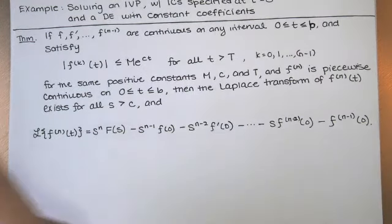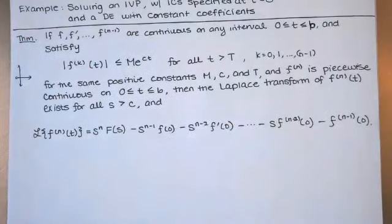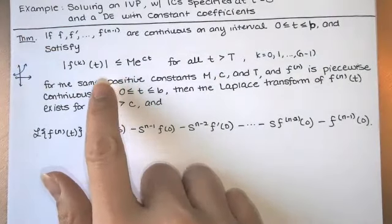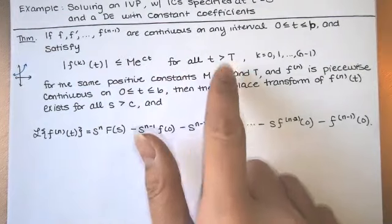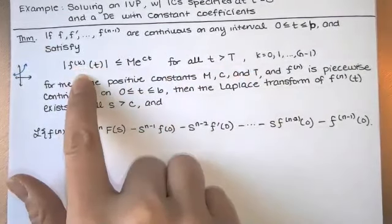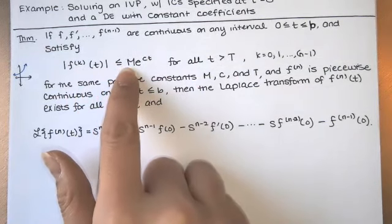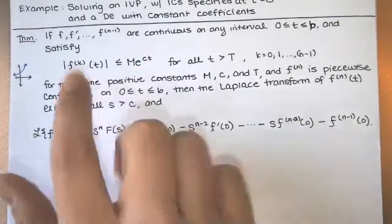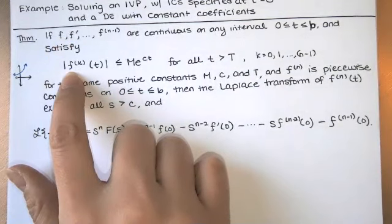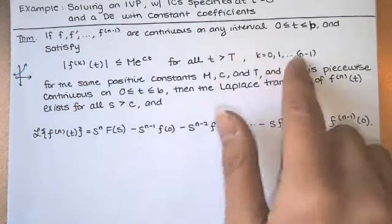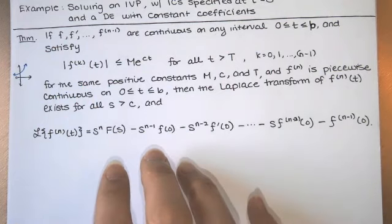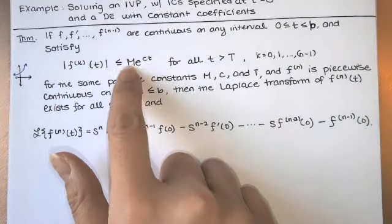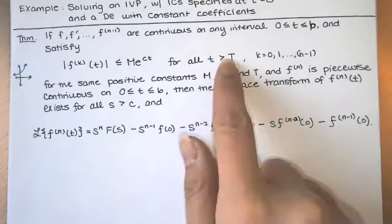These functions are all of exponential order for the same exponential function M·e^(ct). What that means is: eventually, for all t greater than some particular T, the kth derivative of f is less than this exponential function. So the exponential outpaces that function. They're all of exponential order for the same exponential function and the same time interval.